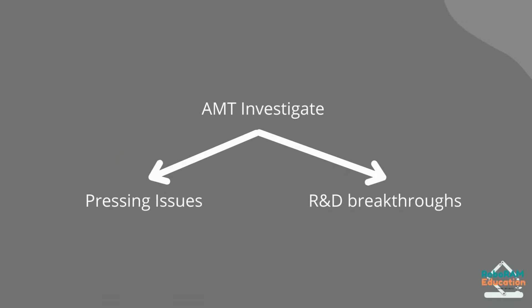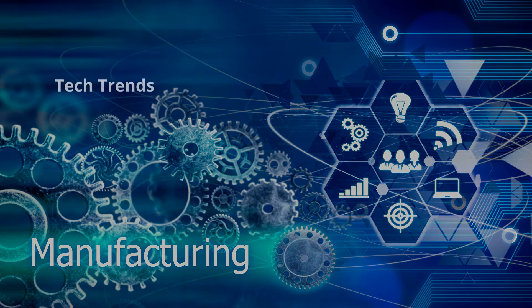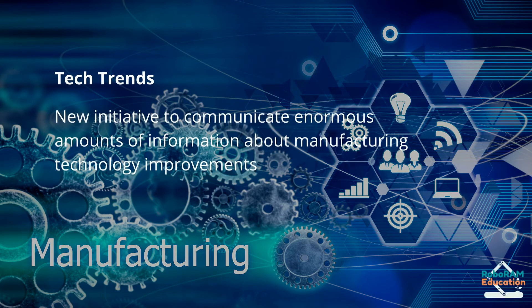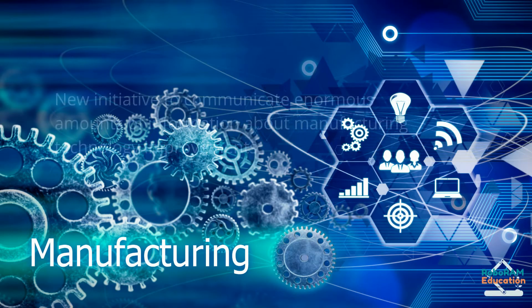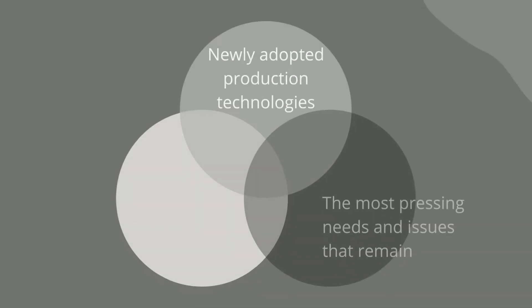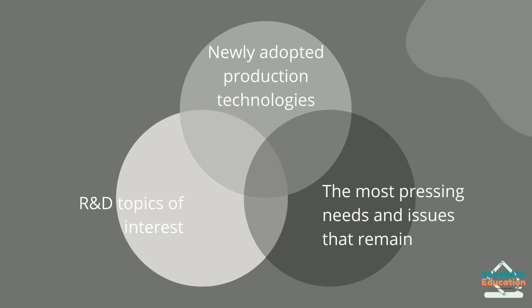AMT set out to investigate the industry's most pressing issues as well as the most recent R&D breakthroughs. Tech Trends is the next phase in this new initiative to communicate enormous amounts of information about manufacturing technology improvements. It examines manufacturing technology trends from three angles: newly adopted production technologies, the most pressing needs and issues that remain, and R&D topics of interest.